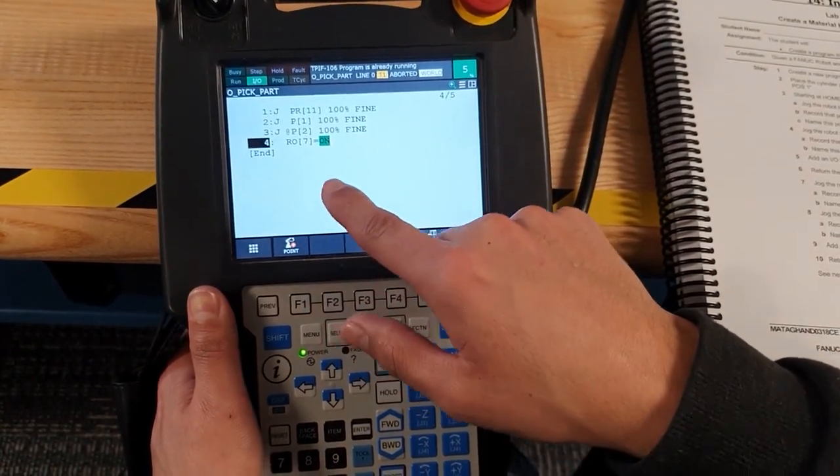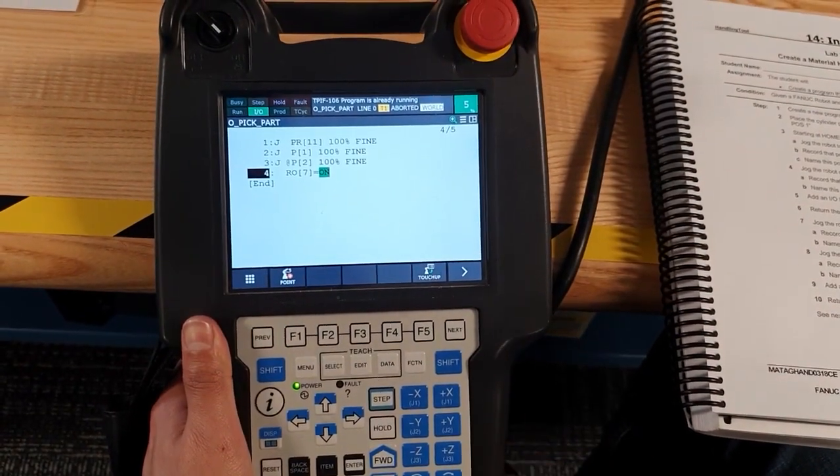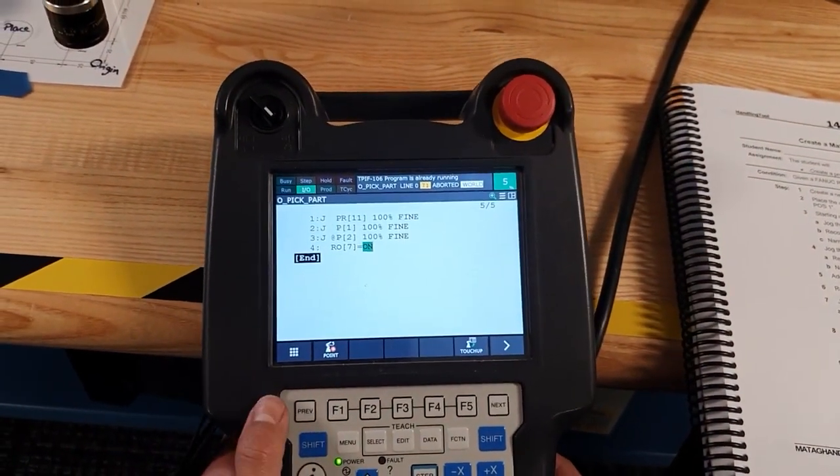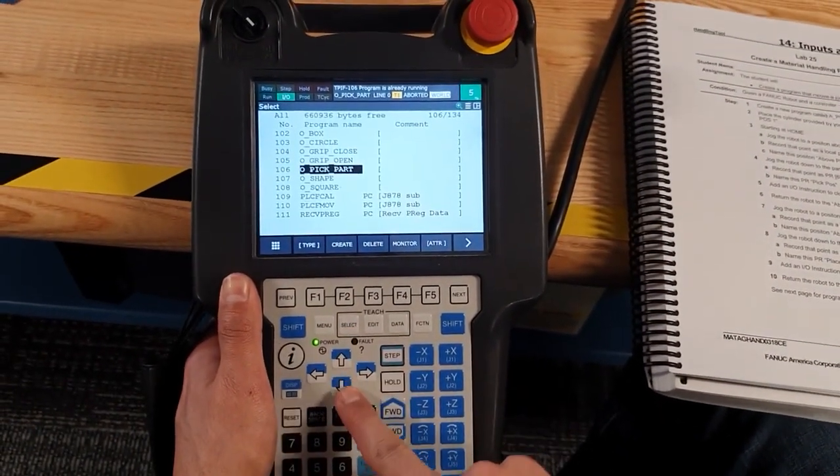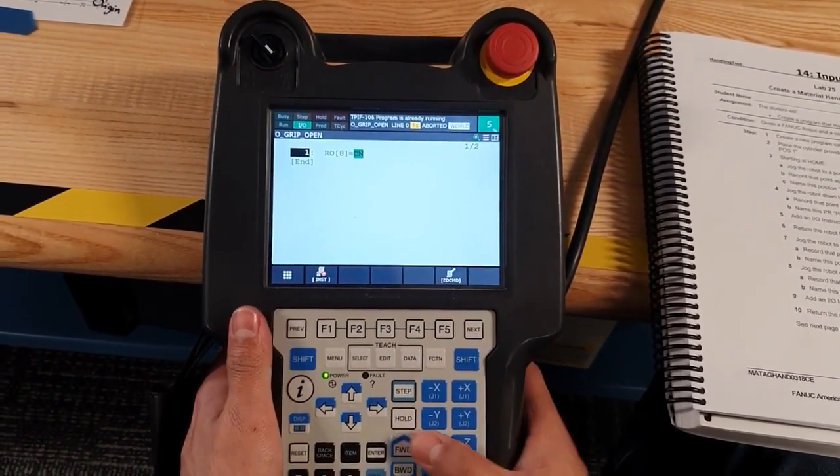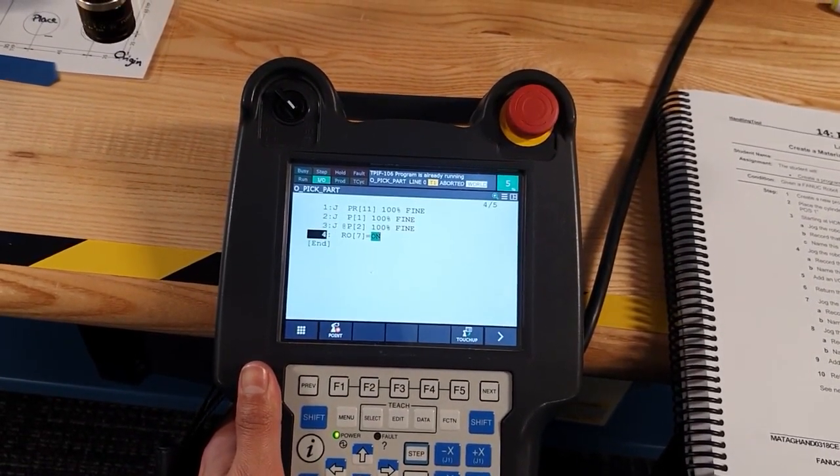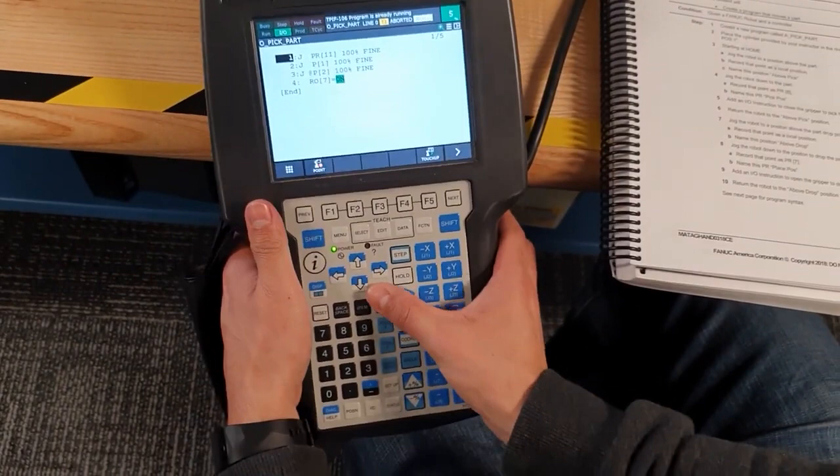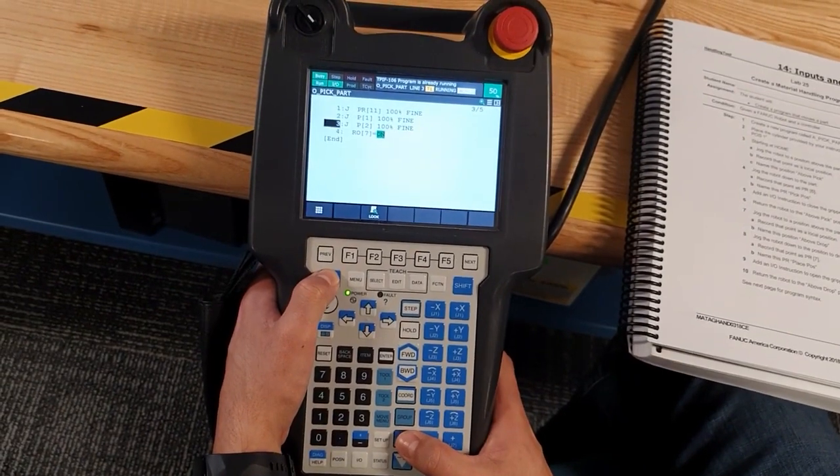Because this one is closed, in robot output 8, because this robot, the gripper open. Okay, but now we are going to select the open gripper and we are going to open the gripper. Select to the pick part, and let's run for this blank.